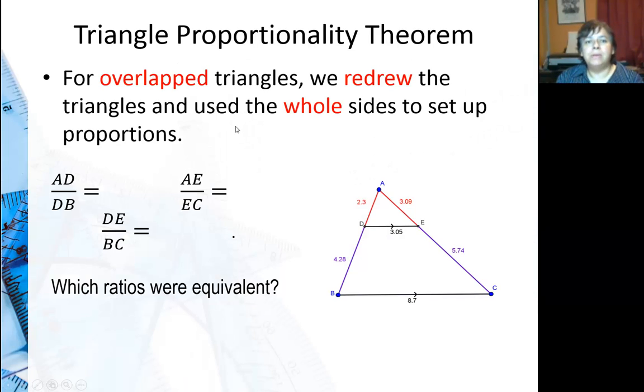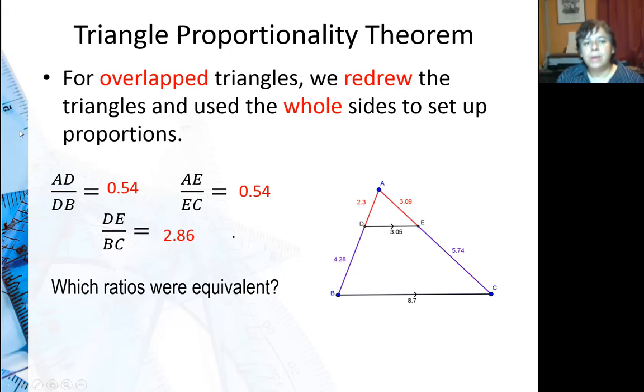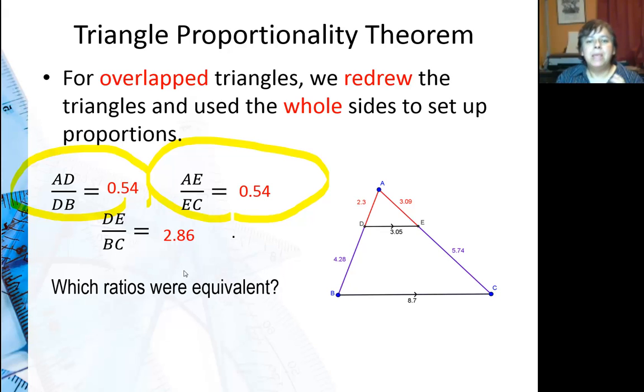For overlapped triangles we redrew the triangles and used whole sides to set up proportions. That's what we did before. What I'm going to do right now is actually set up proportions for the parts that are labeled. So I did 2.3 to 4.28, 3.09 to 5.74, and for both of those I got 0.54. So the two ratios that are equivalent are actually these two: AD/DB and AE/EC. DE over BC is not the same.